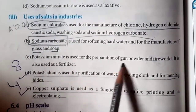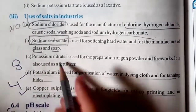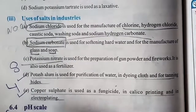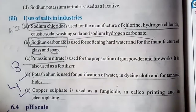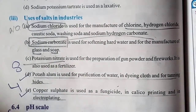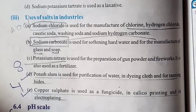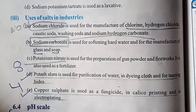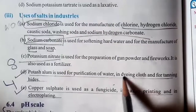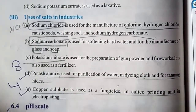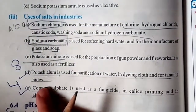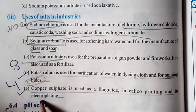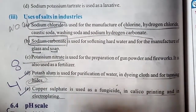Potassium nitrate is used for the preparation of gunpowder and fireworks. It is also used as a fertilizer in agriculture, and for purification of water. Potassium nitrate is also used in dyeing clothes and for tanning hides.